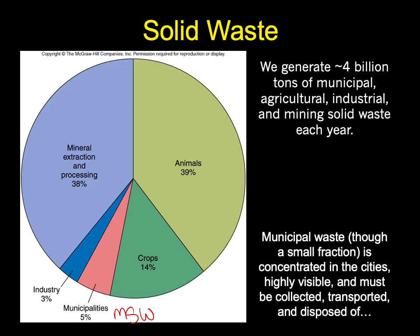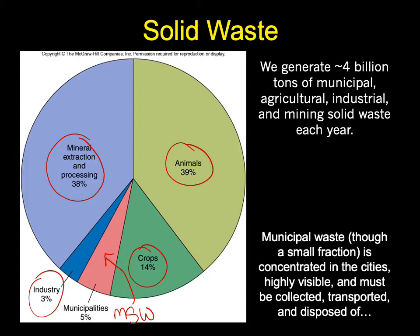We generate about 4 billion tons of municipal, agricultural, industrial, and mining solid waste each year. Municipal solid waste is actually only about 5% of total solid waste we produce — we also make a lot from crops, growing livestock, mineral extraction and processing, and industry. Municipal solid waste gets a lot of attention because it's concentrated in cities. It's what you drag to the curb every Thursday and what makes it into our landfills — the most visible and familiar type of waste.